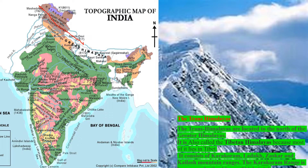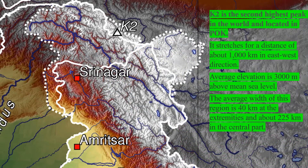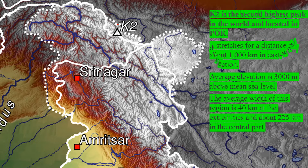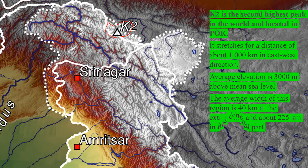The Karakoram range is called the backbone of High Asia. K2 is the second highest peak in the world and is located in Pakistan-occupied Kashmir. The Trans Himalayas stretches for about 1,000 km in the east-west direction. The average elevation is about 3,000 meters above mean sea level, and the average width is 40 km at the extremities and 225 km in the central part.